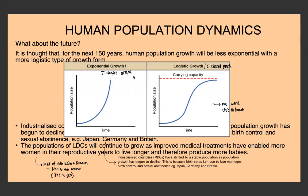The MDCs and industrialized countries have shifted to a more stable population because population growth has begun to decline. Birth rates have decreased due to late marriages, more birth control, and sexual abstinence, in places like Japan, Germany, and Britain.